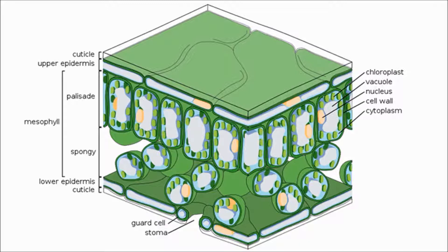When you do a transverse section of a leaf and look at it under a microscope, there's a layer on top called the palisade layer. This is where the light is at its strongest, and so this is where you find the highest concentration of chloroplasts.